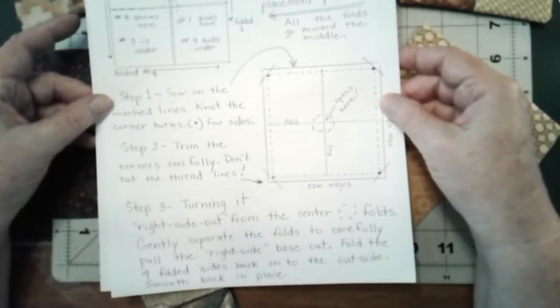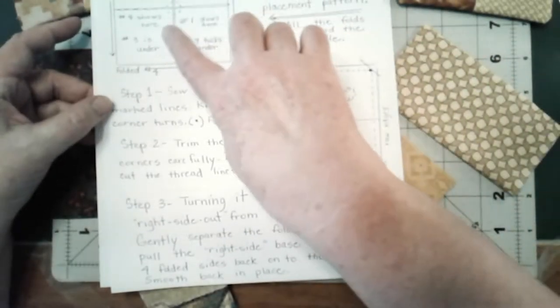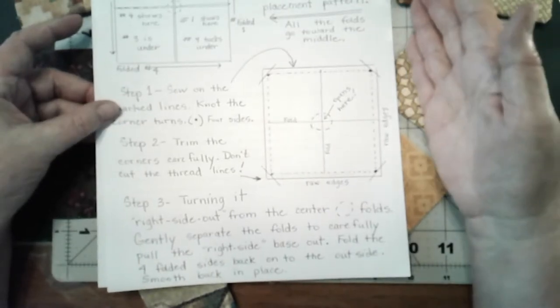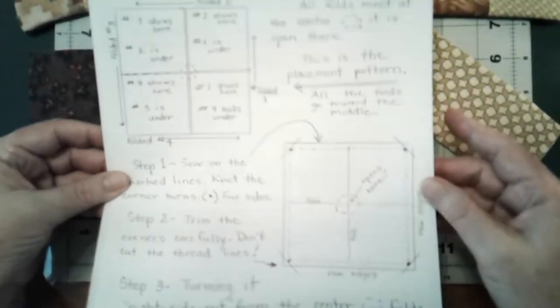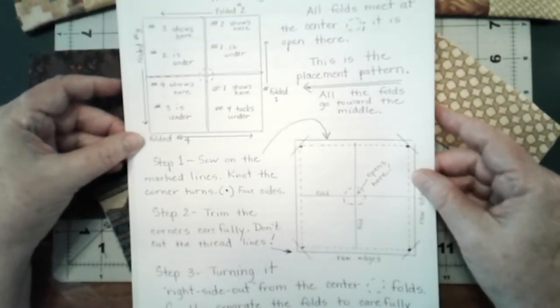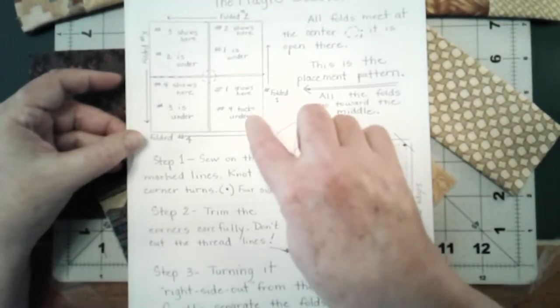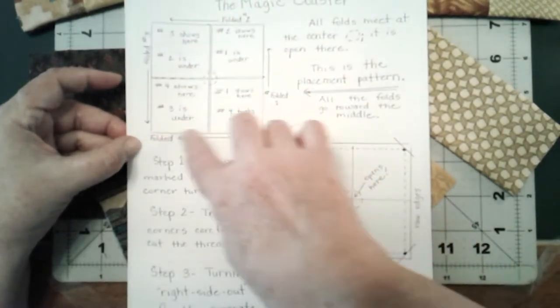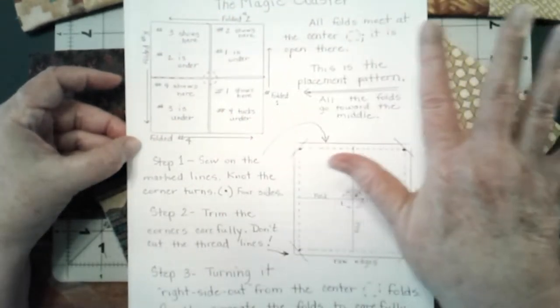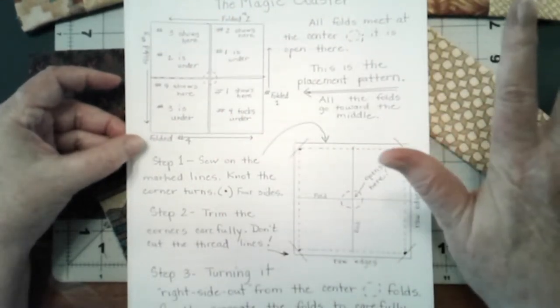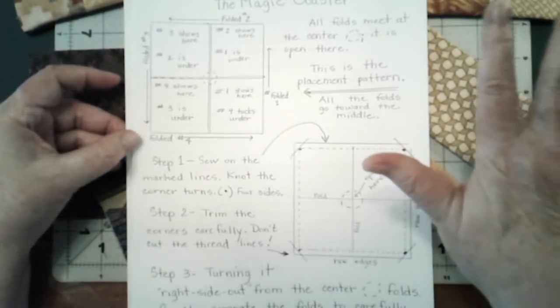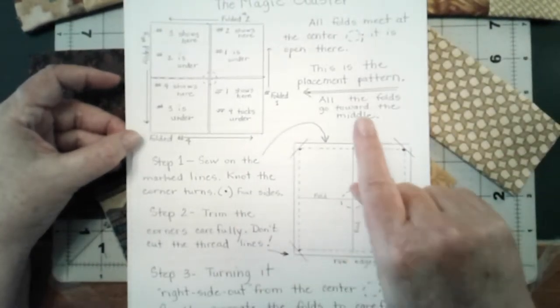All right, now we're going to start with the diagram instructions for the magic coaster. This is kind of tricky to explain, but this little square is five similar five-inch squares of fabric arranged in a certain way to make this magic coaster.